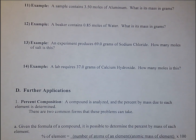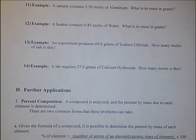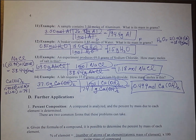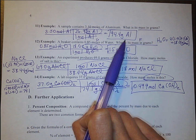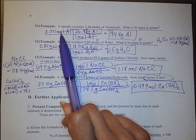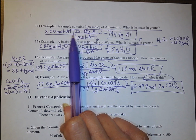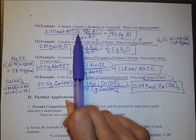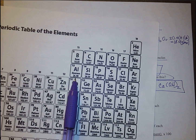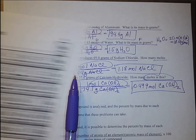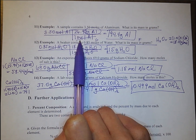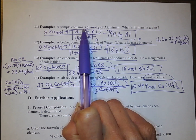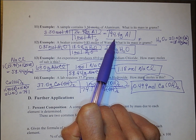Now do problems 11–14, then check your answers. Problem 11: a sample contains 3.5 moles of aluminum — what is the mass in grams? Use the periodic table to find aluminum's mass: 26.98 g/mol. Start with 3.5 moles of aluminum. For every 1 mole, there are 26.98 grams. Multiply numerators and divide by denominators: you get 94.4 grams of aluminum — three significant figures.